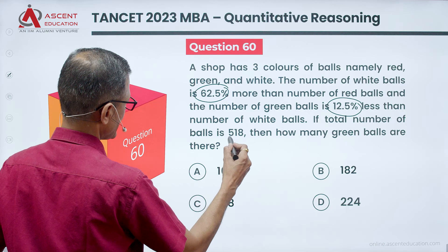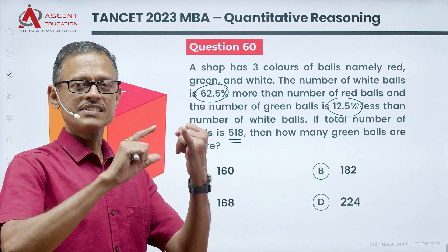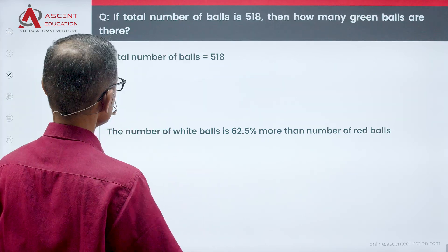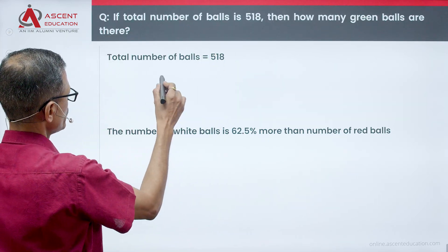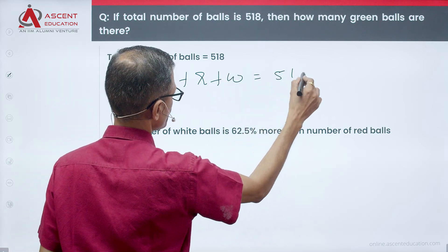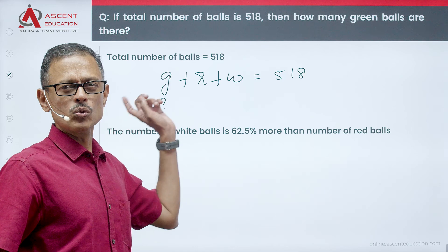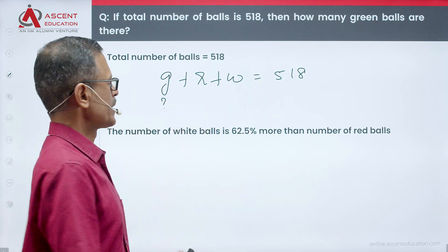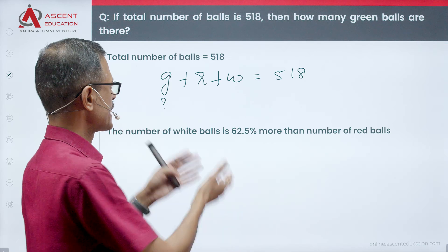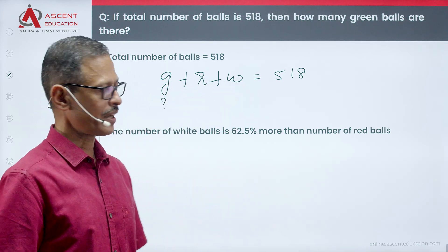If the total number of balls is 518, then how many green balls are there is what the question is. Let's say there are G green balls, R red balls and W white balls. G plus R plus W is equal to 518. This is our starting point. There are three variables. Essentially, if I am able to write R and W in terms of G, or if I am able to write G and R in terms of W, we can solve it.